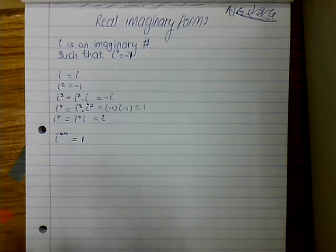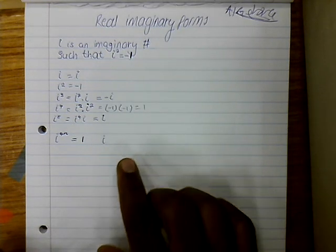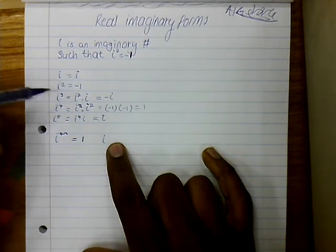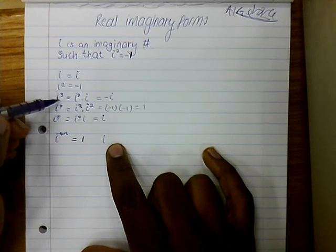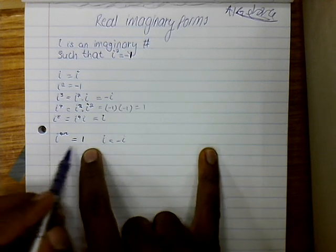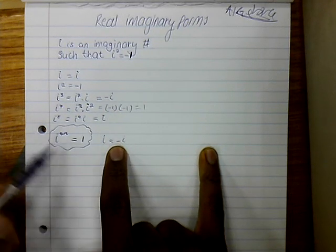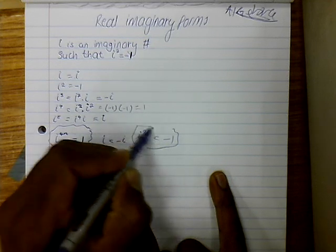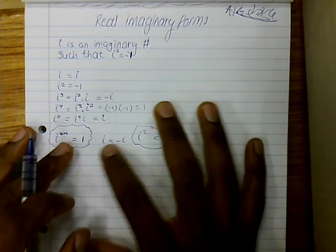What is really important is i to any multiple of 4 gives 1, and odd multiples like 3, 6, 9 give negative i. Most importantly, i squared equals minus 1. These two facts are what is really important because we derive everything else from them.